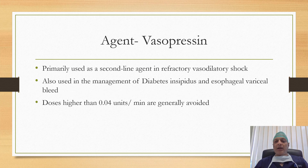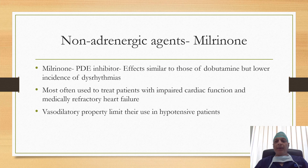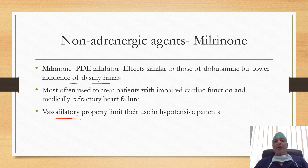Vasopressin is a non-adrenergic agent and is primarily used as a second-line agent in refractory vasodilatory shock. Doses higher than 0.04 units per minute are generally avoided. The effect of milrinone is similar to those of dobutamine but with a lower incidence of dysrhythmias. It is most often used to treat patients with impaired cardiac function and medically refractory heart failure. The vasodilatory property of milrinone limits its use in hypotensive patients.